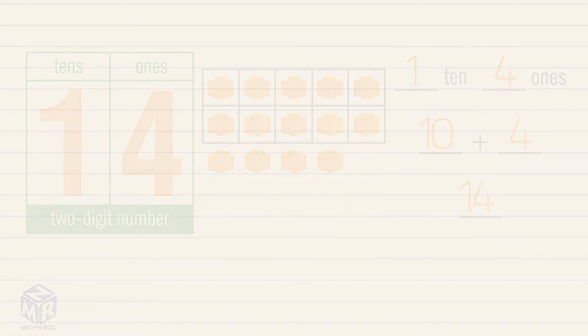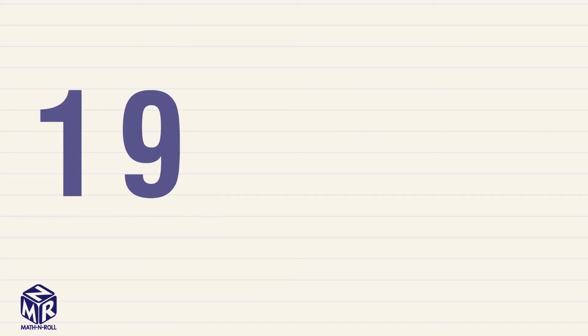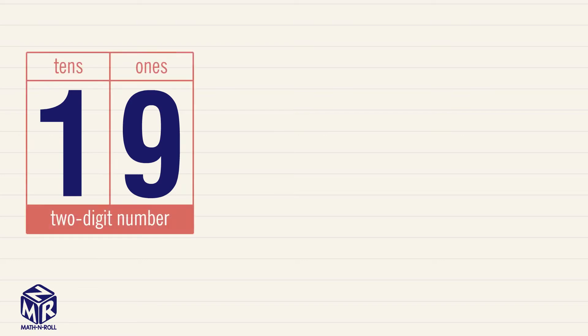Let's try another example. 19 is a two-digit number. The 1 in 19 means 1 ten. The 9 in 19 means 9 ones.